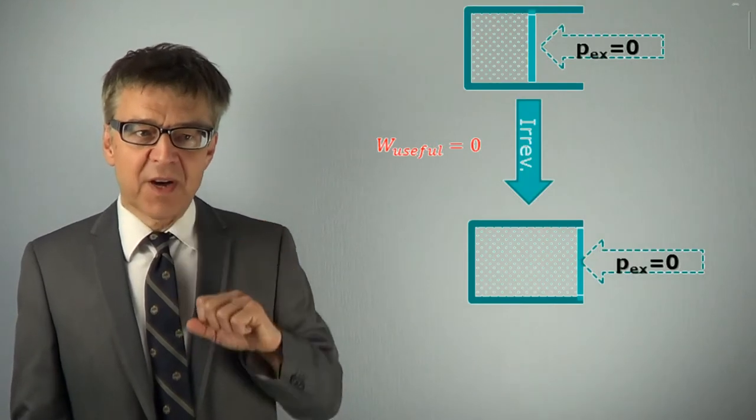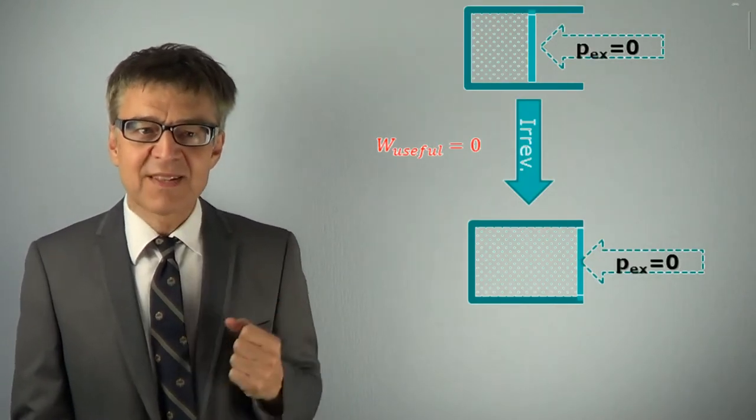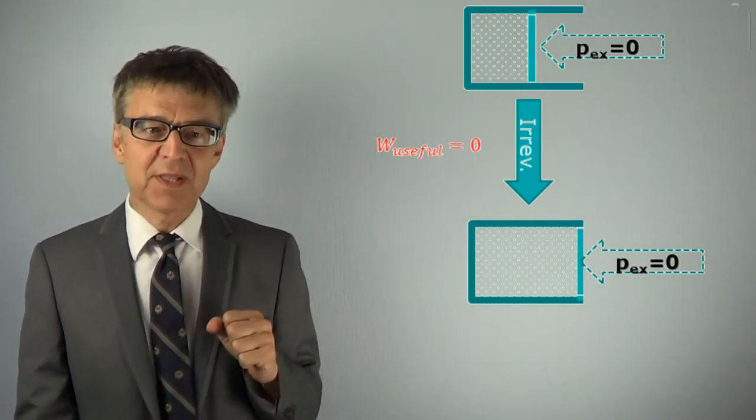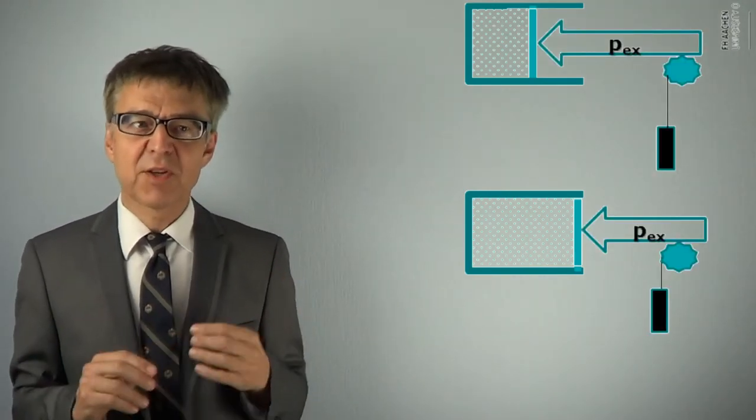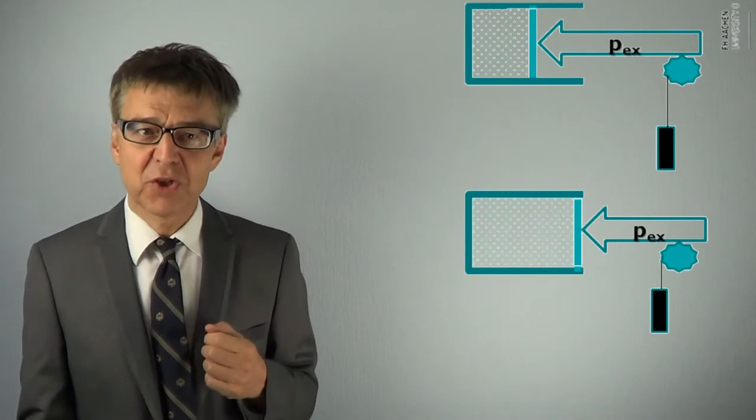We can modify the experiment, more precisely redo the experiment and alter the path. Note that we may not modify the initial and final states, as they define our process. We try to carry out the process in such a way that the volume expansion will be associated with the lifting of a weight. In this case, a certain amount of work, namely the gravitational work, is obtained by the expansion.